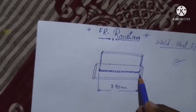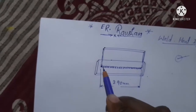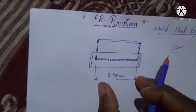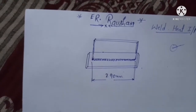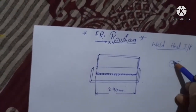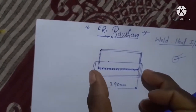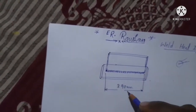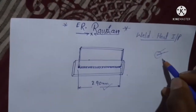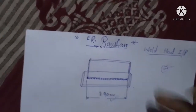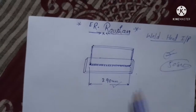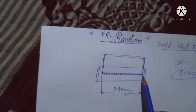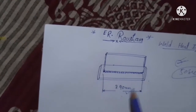Start your welding and calculate how much time is taken to complete this welding, and calculate the welding distance with the help of a vernier caliper or digital vernier caliper or any measuring instrument. Two data are calculated here: first, the welding distance, which is 290 mm, and second, the time taken to complete this weld length, which is 50 seconds. So what is the welding speed of the welder — what is the speed of the welding torch?